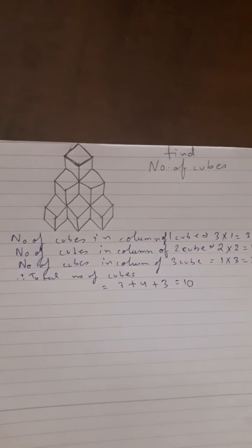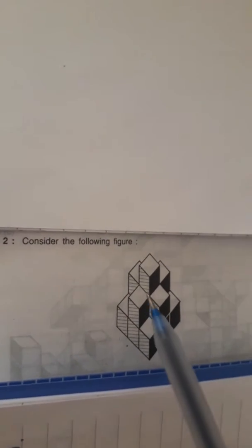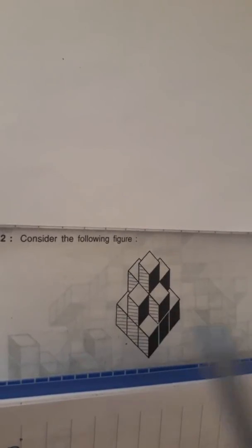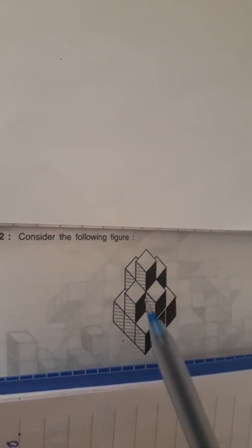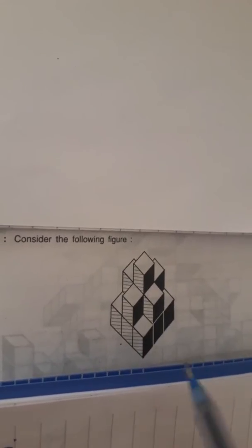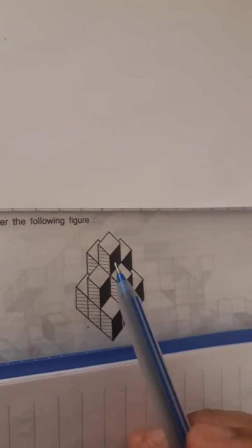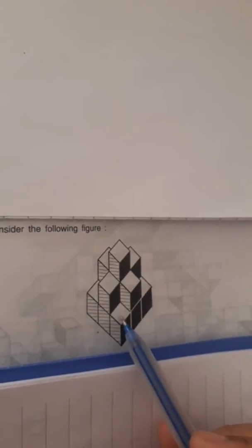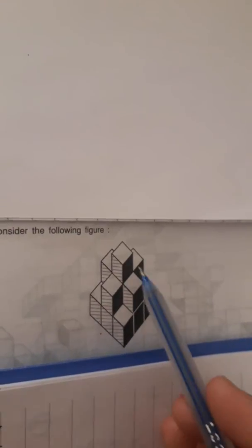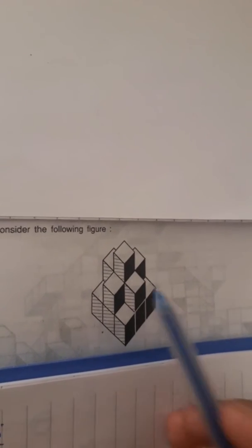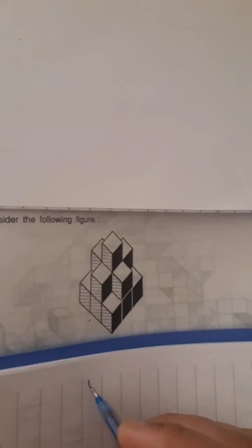Let's move to the second question — how to find the number of cubes for this given figure. You can see here there are one, two, and three cubes. First we will find for one cube how many columns are there — one, two, three, and similarly four on the back side, making four columns for one cube.